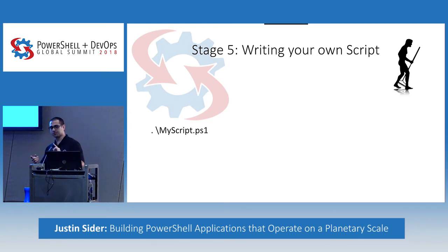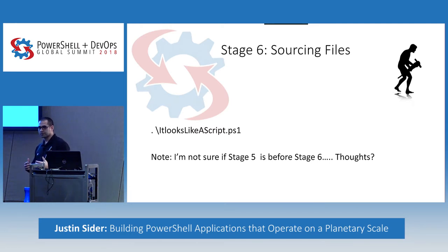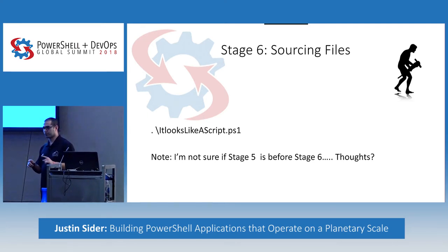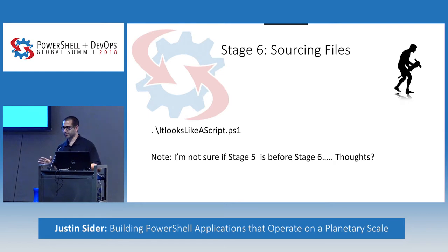Stages five and six — I'm not sure which comes first: writing your own script, and then sourcing files. Any feedback on what you think comes first? How many folks source files? Do you feel that's more advantageous than modules? It really depends on what you're doing. I tend to lean towards modules — it can be overkill depending on the amount of work, but I think sourcing has its advantages.